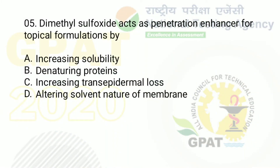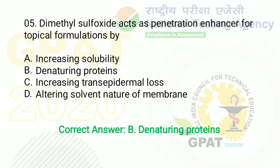The question: dimethyl sulfoxide acts as a penetration enhancer for topical formulation by. Option A: increasing solubility. Option B: denaturing proteins. Option C: increasing trans-epidermal loss. Option D: altering solvent nature of membrane. The right answer is option B — denaturing proteins.